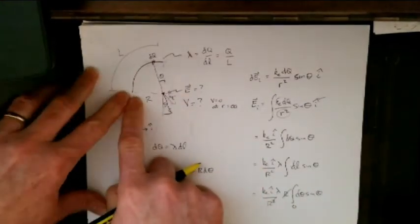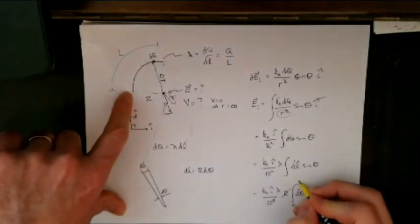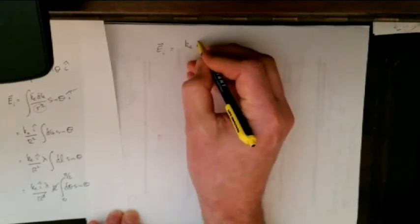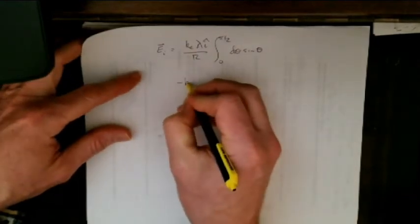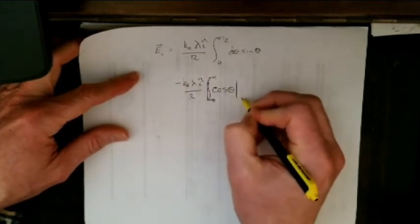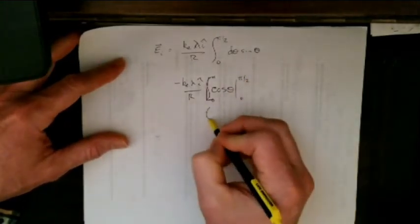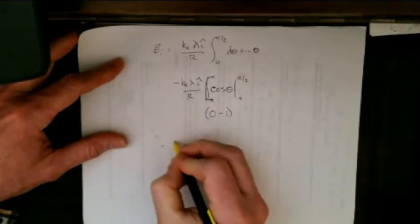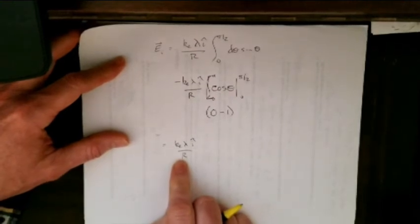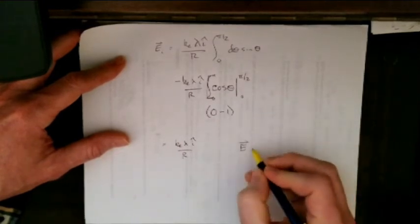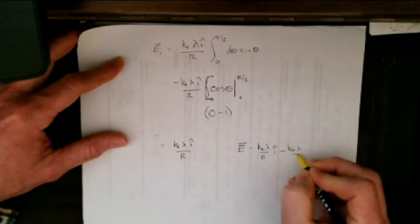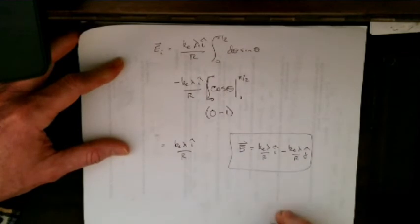Theta is going to go from 0 to pi over 2. My electric field in the i-direction: the integral of sine theta is negative cosine theta, so I have negative KE·lambda·i-hat over R, times cosine theta evaluated from 0 to pi over 2. Plugging in pi over 2 gives 0, so this becomes 0 minus negative 1, which equals positive 1. I'm left with KE·lambda·i-hat over R. We do get a positive value, which is expected because it is in the positive i-hat direction. So my total electric field at that central point is KE·lambda over R·i-hat minus KE·lambda over R·j-hat.